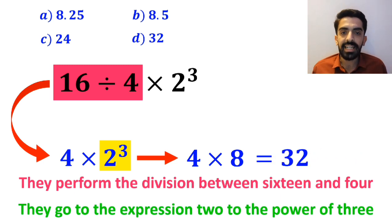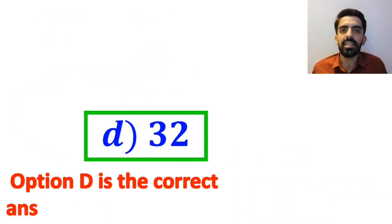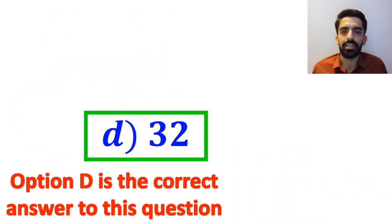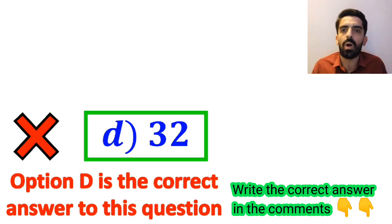Then, without any hesitation, they quickly say that option D is the correct answer to this question. But this answer is absolutely wrong.